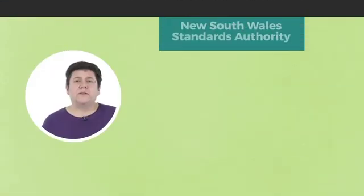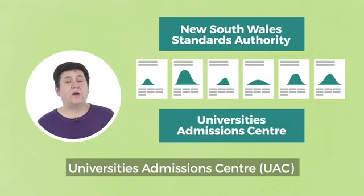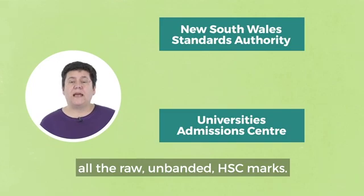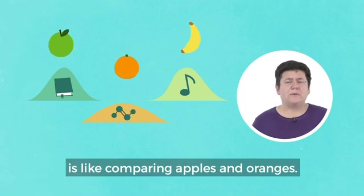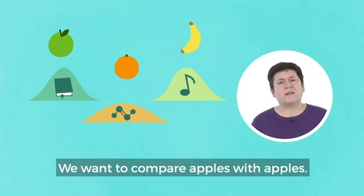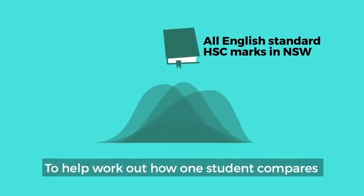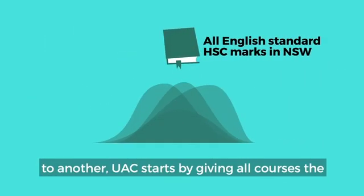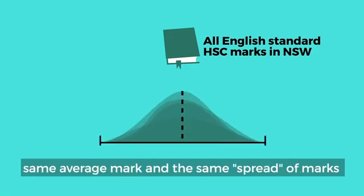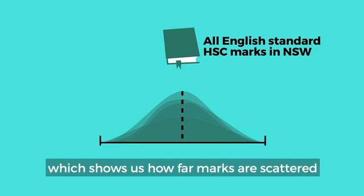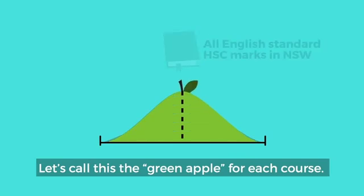How is your ATAR calculated? The New South Wales Standards Authority gives the University Admissions Centre, or UAC, all the raw unbanded HSC marks. But comparing across courses is like comparing apples and oranges — we want to compare apples with apples. To help work out how one student compares to another, UAC starts by giving all courses the same average mark and the same spread of marks, which shows how far marks are scattered on either side of the average. Let's call this the green apple for each course.